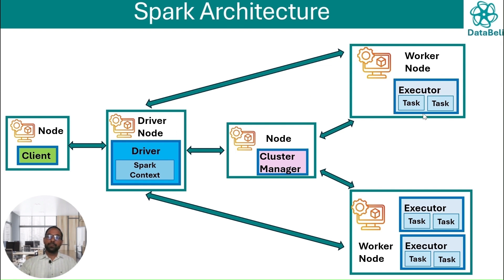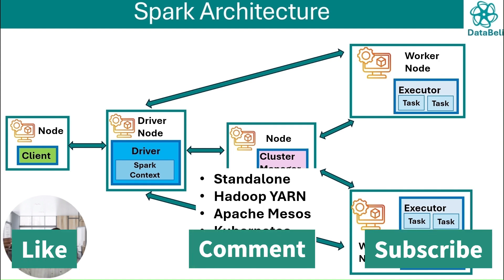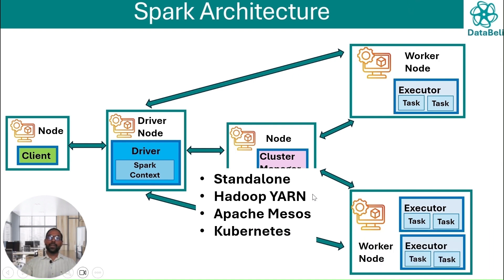Other components we will discuss a lot more, but this cluster manager is a small component. Its job is only to coordinate and keep track of the resources. There can be different types of cluster managers - like it can be standalone, which comes by default with Spark, or there can be some external cluster managers also like Hadoop YARN, Apache Mesos, or Kubernetes. These are just some different types of managers who can track the details of the different resources in some different way. So depending on the environment, any of these cluster managers can be used.